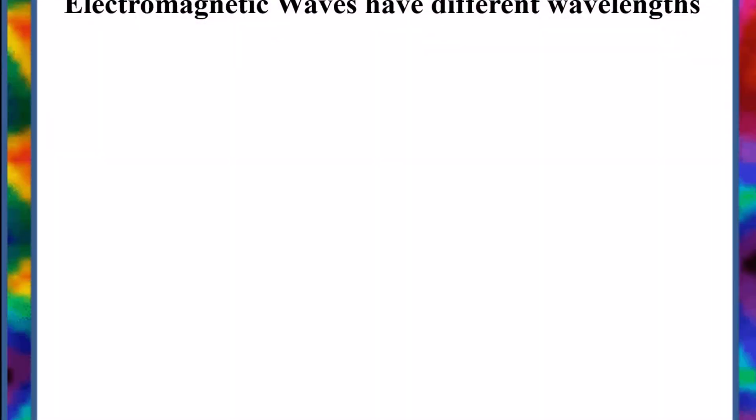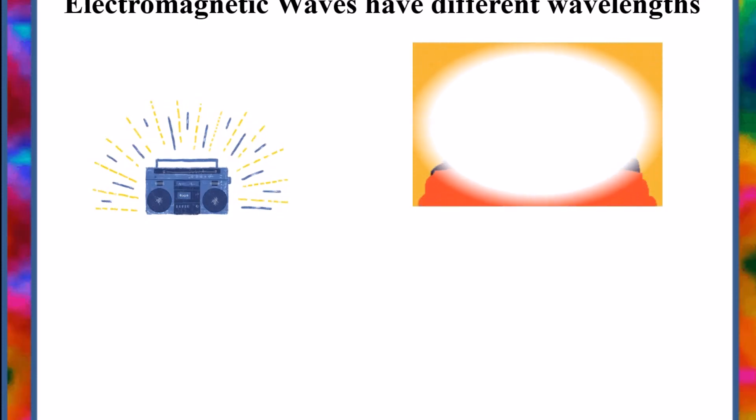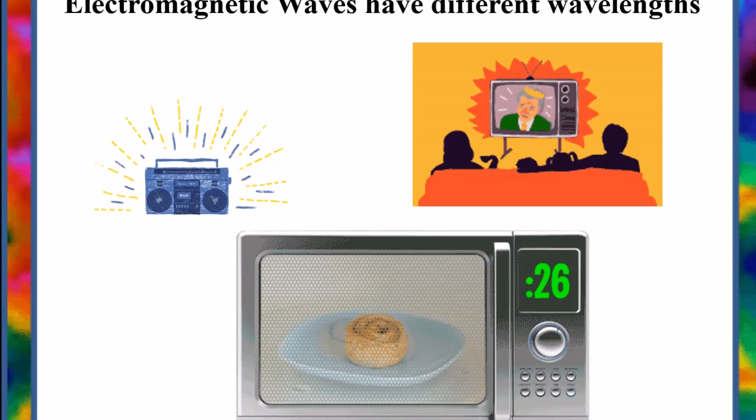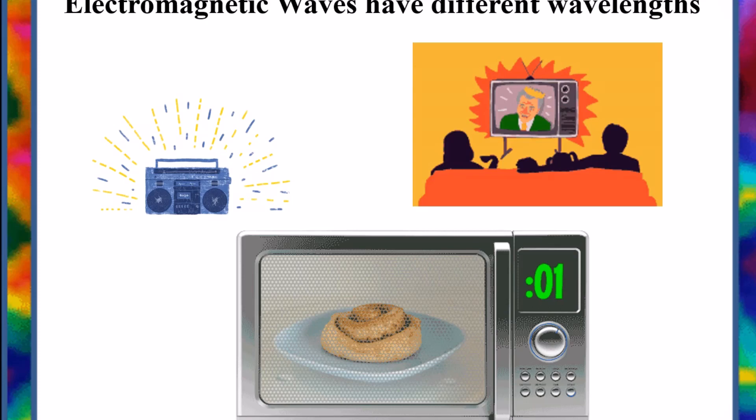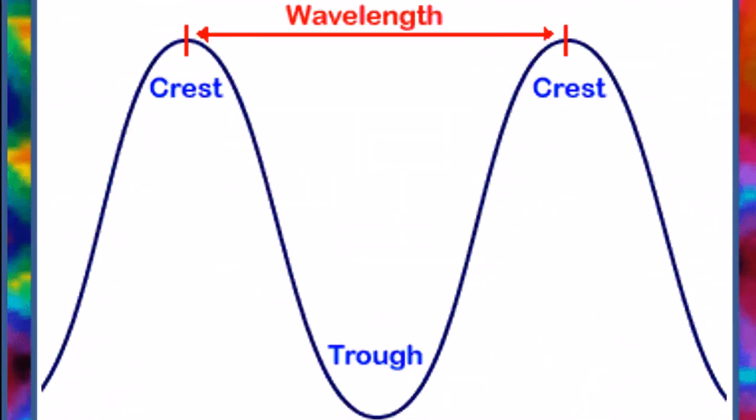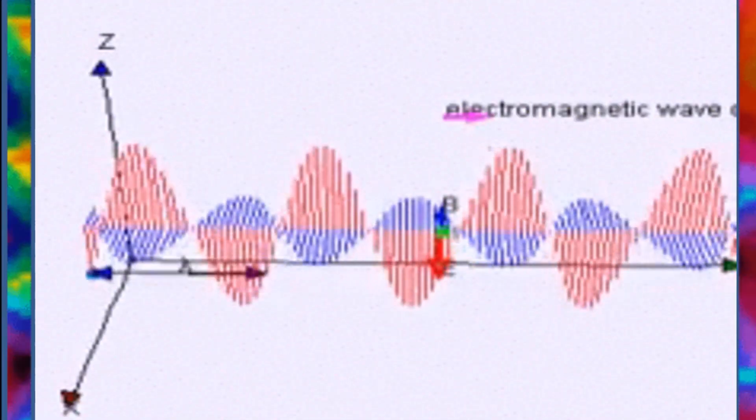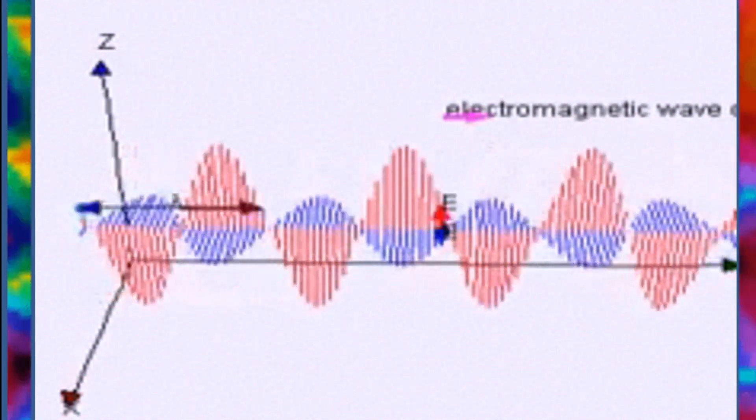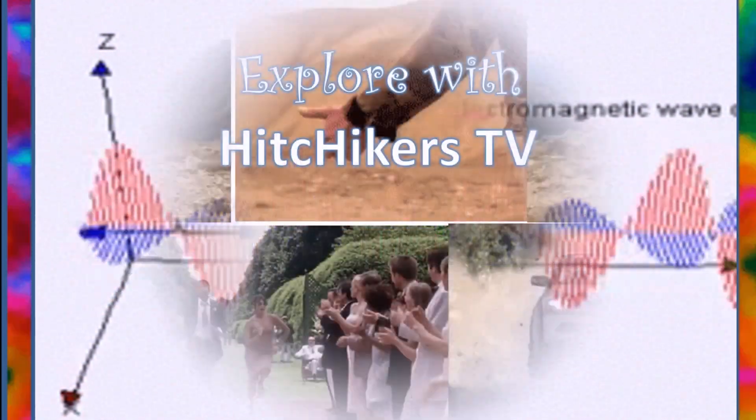When you listen to the radio, watch TV, or cook dinner in a microwave oven, you are using electromagnetic waves. Radio waves, television waves, and microwaves are all types of electromagnetic waves. They only differ from each other in wavelength. Wavelength is the distance between one wave crest to the next. Waves in the electromagnetic spectrum vary in size from very long radio waves the size of buildings to very short gamma rays smaller than the size of the nucleus of an atom.